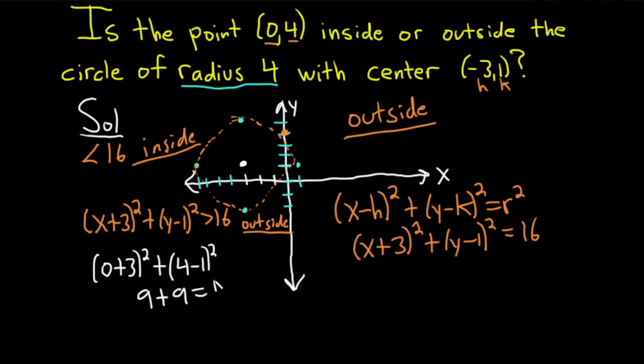3 squared is 9. That's 18. That's bigger than 16, so it's outside the circle. So kind of interesting.